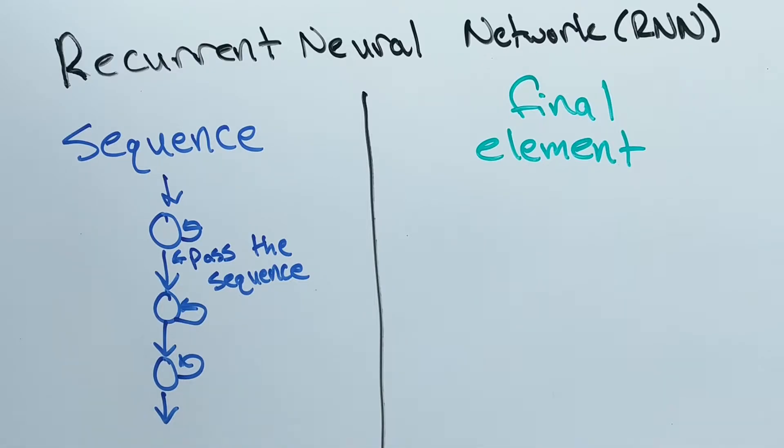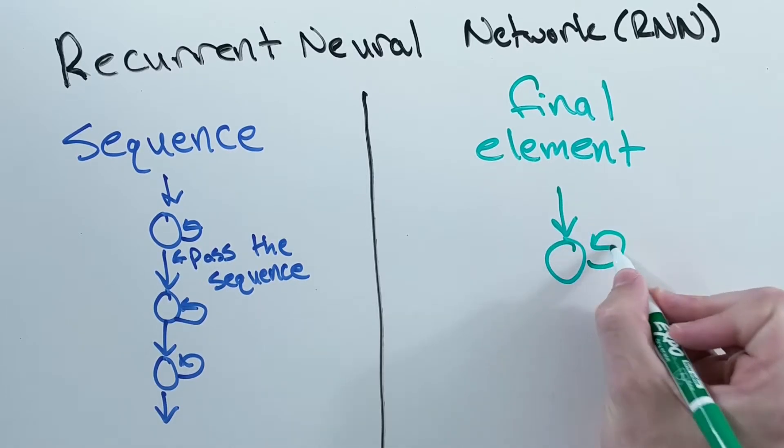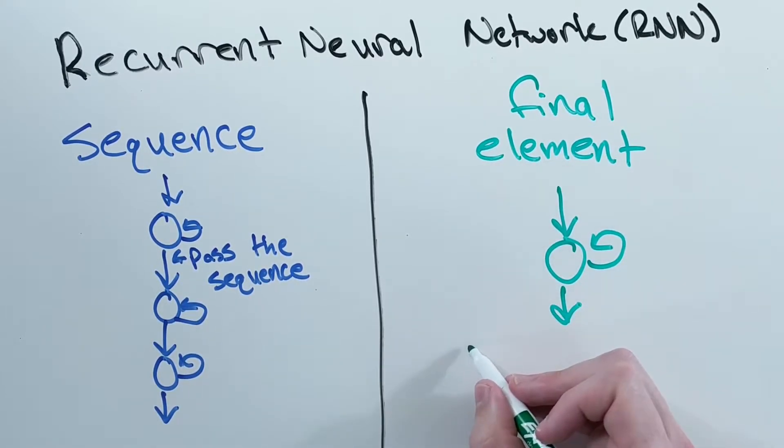On the other hand, you would usually use the final state of the sequence if you no longer needed to keep the time series, like if it was in the last RNN layer.